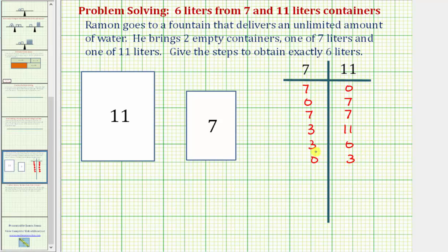Next, we'll fill up the seven-liter container, so we'll have seven liters here and three liters here. Now we're going to pour these seven liters into the eleven-liter container, which will give us zero liters in the seven-liter container and ten liters in the eleven-liter container.